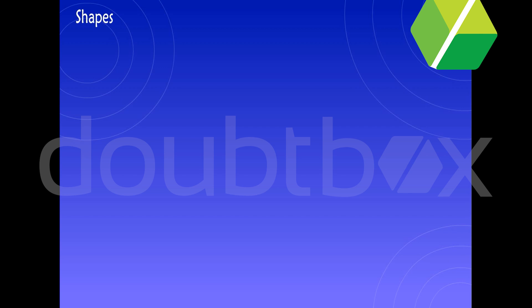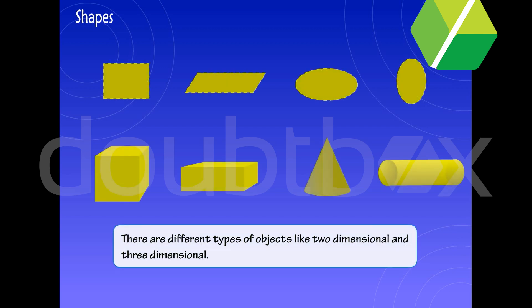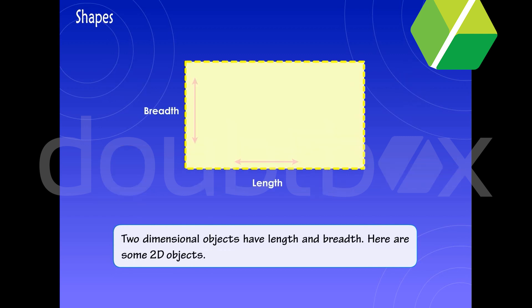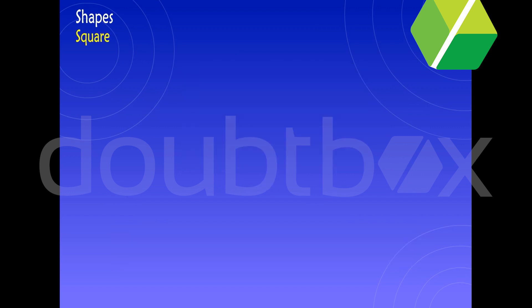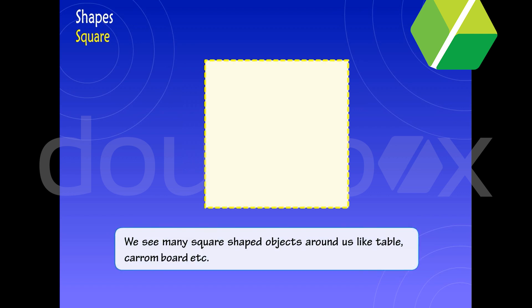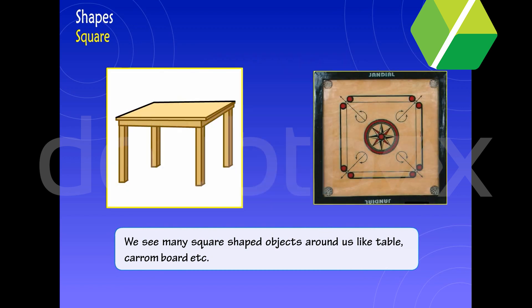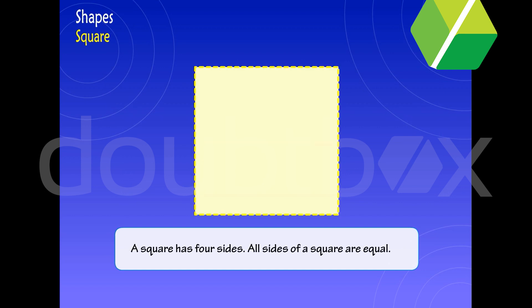Shapes. There are different types of objects like two-dimensional and three-dimensional. Two-dimensional objects have length and breadth. Square — we see many square-shaped objects around us like tables, carrom boards, etc. A square has four sides and all sides of a square are equal.